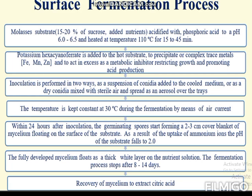For the surface fermentation process, molasses substrate with 15 to 20 percent sucrose is used. Nutrients are added and the substrate is acidified with phosphoric acid to maintain a pH of 6 to 6.5, then heated at around 110 degrees Celsius for 15 to 45 minutes. After that, potassium hexacyanoferrate is added to the hot substrate to precipitate trace metals like iron, magnesium, and zinc, and to act as a metabolic inhibitor restricting growth and promoting acid production.